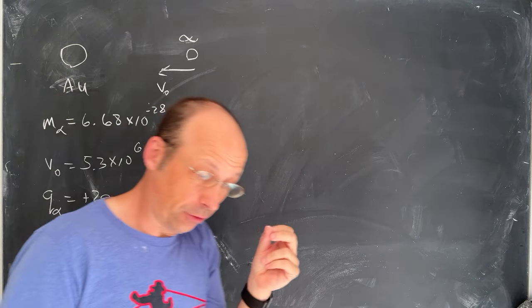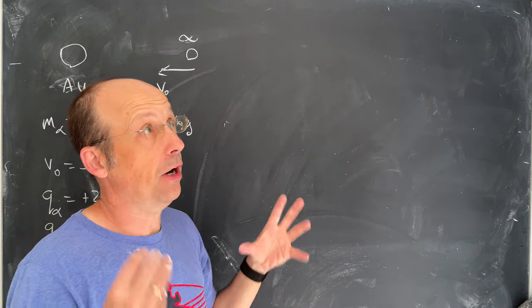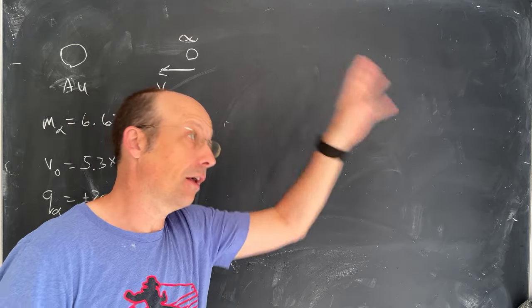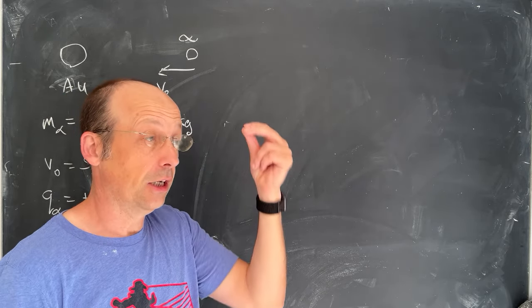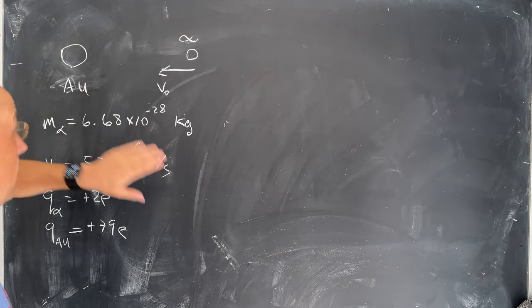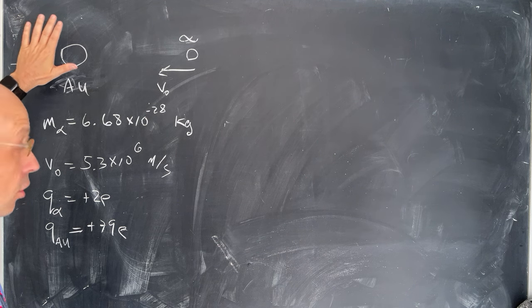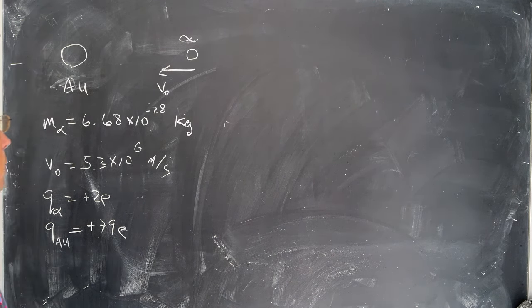And over here I have an alpha particle. So an alpha particle is a type of radiation, a type of radioactive decay element. It's essentially just a helium atom without the electrons. So it's two protons and two neutrons. This has a charge of plus two electrons and gold nucleus has a charge of plus 79 electrons because it has 79 protons in there.